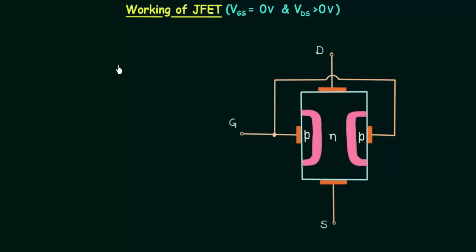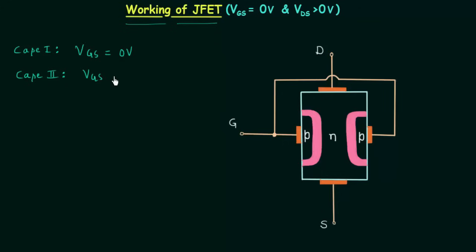In the last presentation we saw the construction of JFET and now I will explain the working of JFET. I have divided the working of JFET into two cases. In case number one, VGS is equal to zero volts, meaning we are applying zero voltage to the gate. In case number two, VGS is negative, meaning VGS is less than zero volts, so a negative voltage is applied at the gate. For both cases, voltage VDS is positive — the voltage between the drain terminal and the source terminal is greater than zero volts. In this lecture we will discuss only case number one.